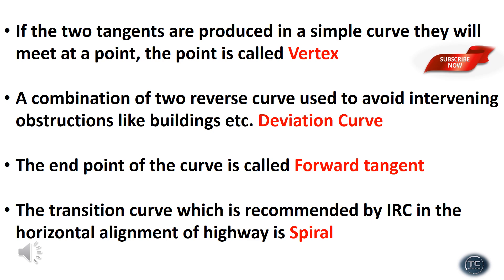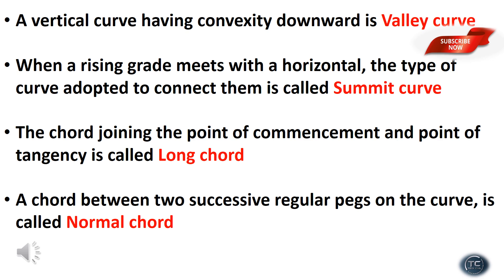The transition curve recommended by IRC in the horizontal alignment of a highway is the spiral. The vertical curve having convexity downward is the valley curve.